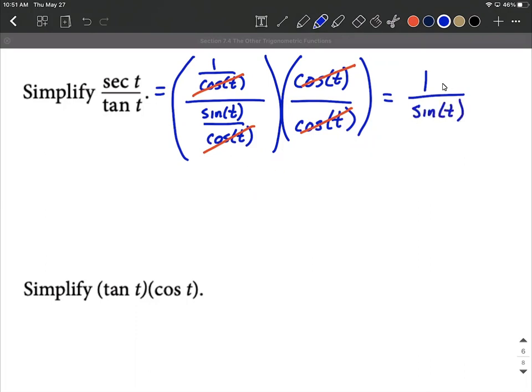With that pretty simplified down, we can do a little bit better than this though using one more reciprocal identity that one over sine is equivalent to the cosecant of t. So that's going to be the best answer we can get to on this one.